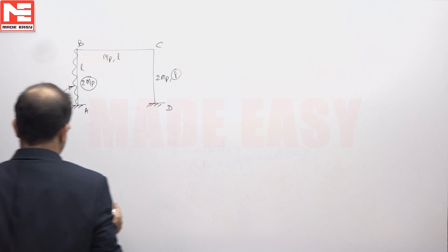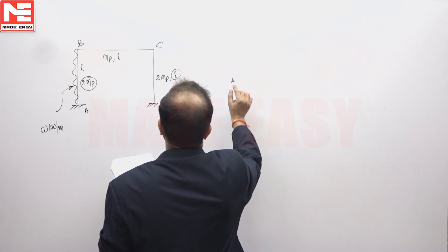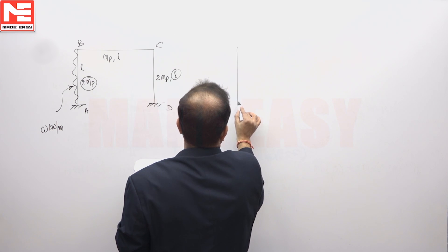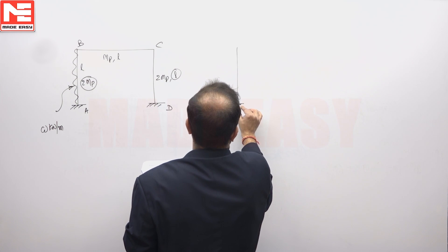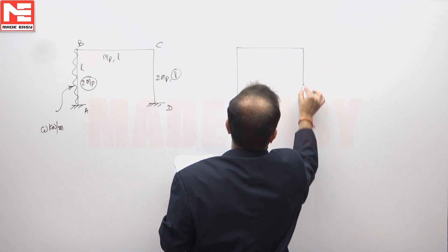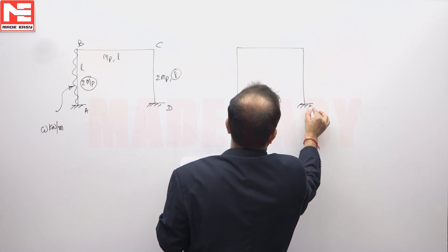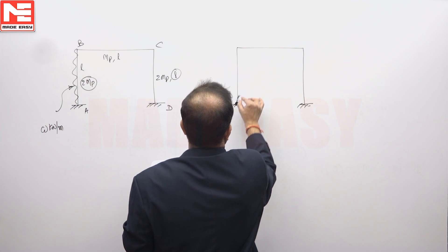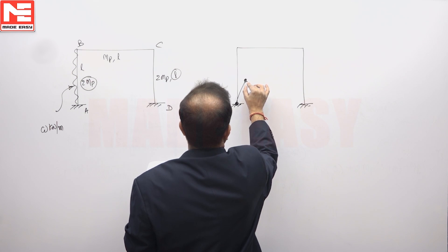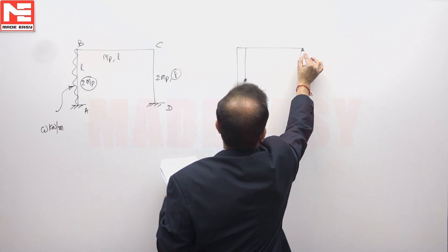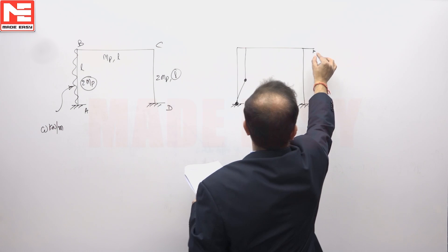Considering only the combined mechanism, if you consider the combined mechanism that will go something like this. Hinge will develop here, another hinge will develop somewhere here, goes straight, it also goes like this.